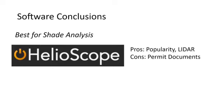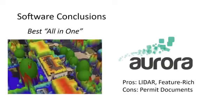Helioscope does shade analysis quickly and easily — there's a reason it's the popular tool. Their competitor Aurora gets high marks for a very robust 3D modeling system. If your goal is accurate shade analysis, Aurora is the most feature-rich software out there, though it's on the high end of pricing. You get what you pay for.